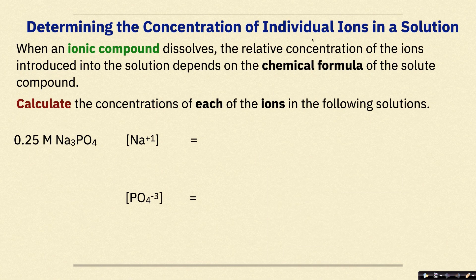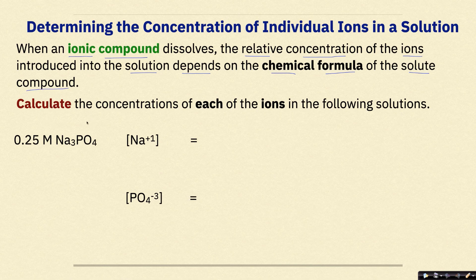Determining the concentration of individual ions in a solution. When an ionic compound dissolves, the relative concentration — in other words the molarity — of the ions introduced into the solution depends on the chemical formula of the solute compound. We're looking to calculate the concentrations, again the molarity, of each of the ions in the following solutions. They're all very soluble compounds and will fully dissociate. The first one is Na3PO4 with an overall concentration of 0.25 molar.